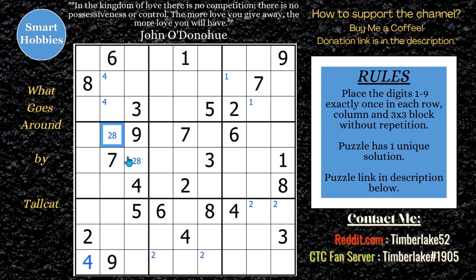When I put in center marks, that's noting all the possible candidates that can be in that particular cell — just for those of you who are new and may not be familiar with the notation. Looking at the fours elsewhere, there are three spots for four here in block six, so I can't do anything there.